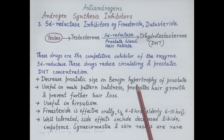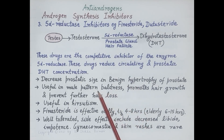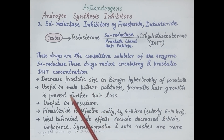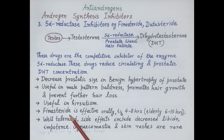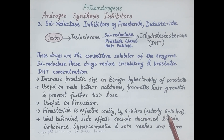5-alpha reductase inhibitors are used in the treatment of benign hypertrophy of the prostate — that is, enlarged prostate gland. Since increased dihydrotestosterone is also responsible for male pattern baldness, these drugs are indicated in treating male pattern baldness, as they promote hair growth and prevent further hair loss. They are also useful in treating hirsutism — excessive hair growth in women. Finasteride is effective orally; its half-life is 4–8 hours, and in elderly patients 6–15 hours. It is well tolerated; side effects include decreased libido and impotence.